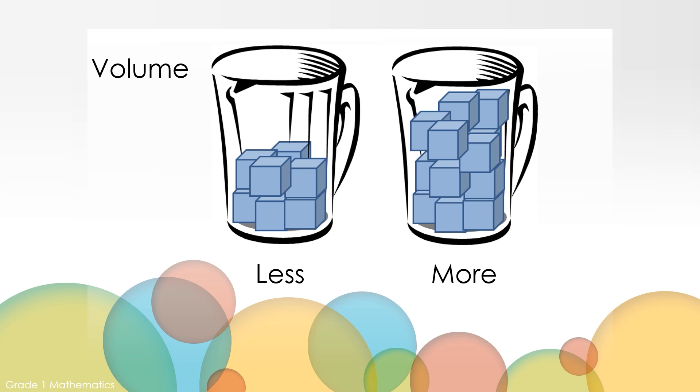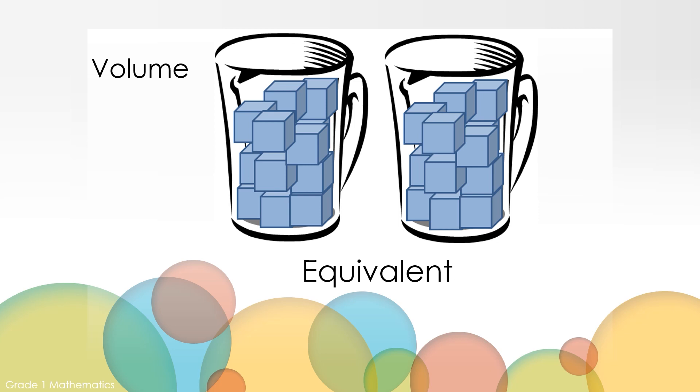We can use the words less and more to describe volume. One pitcher has less ice. Less is a smaller amount. The other pitcher has more ice. There are more ice cubes. We can also use the word equivalent to describe volume with the same amount. These pitchers have the same amount of ice.